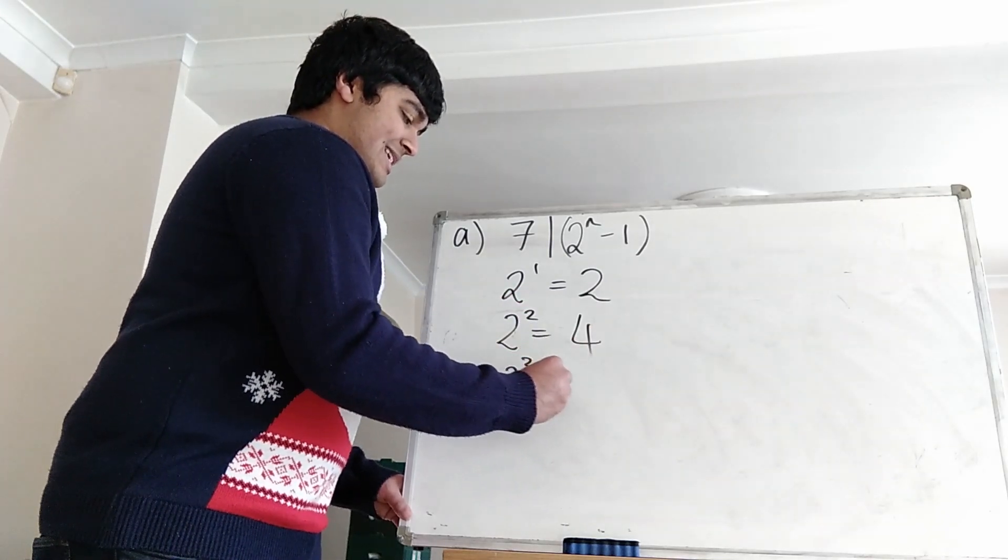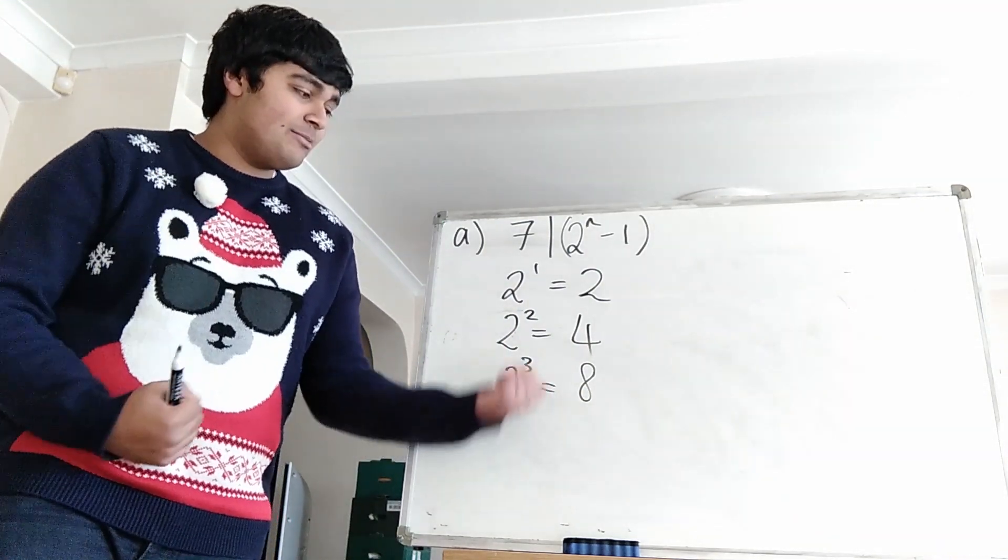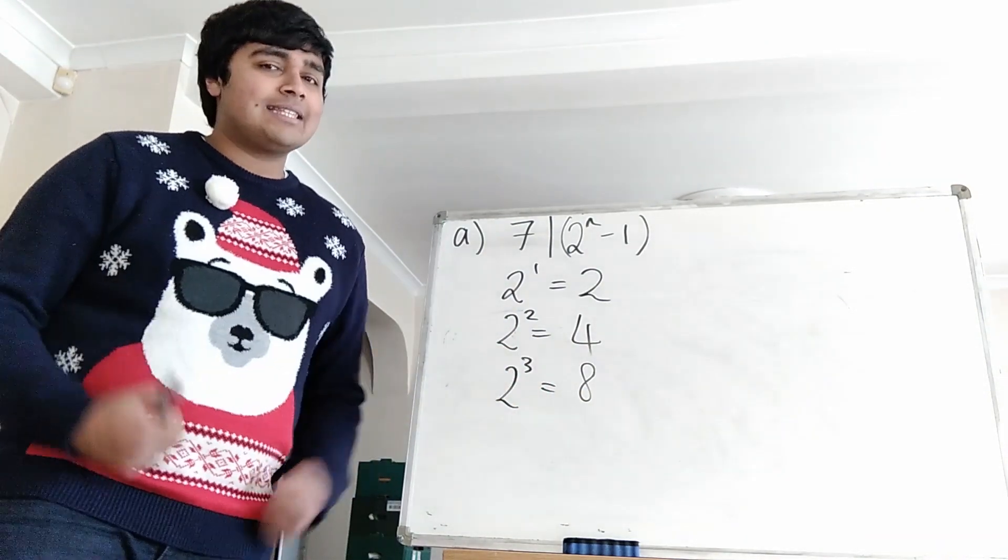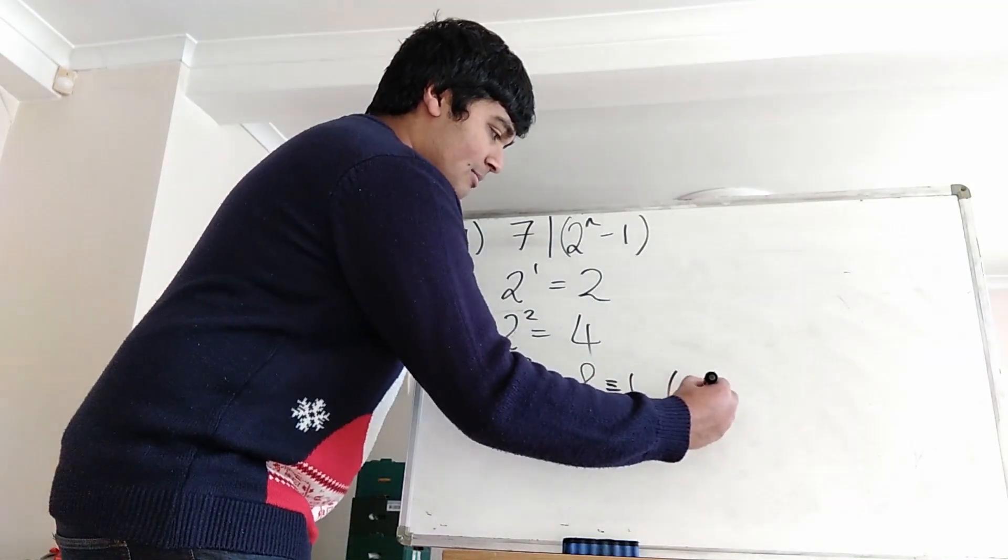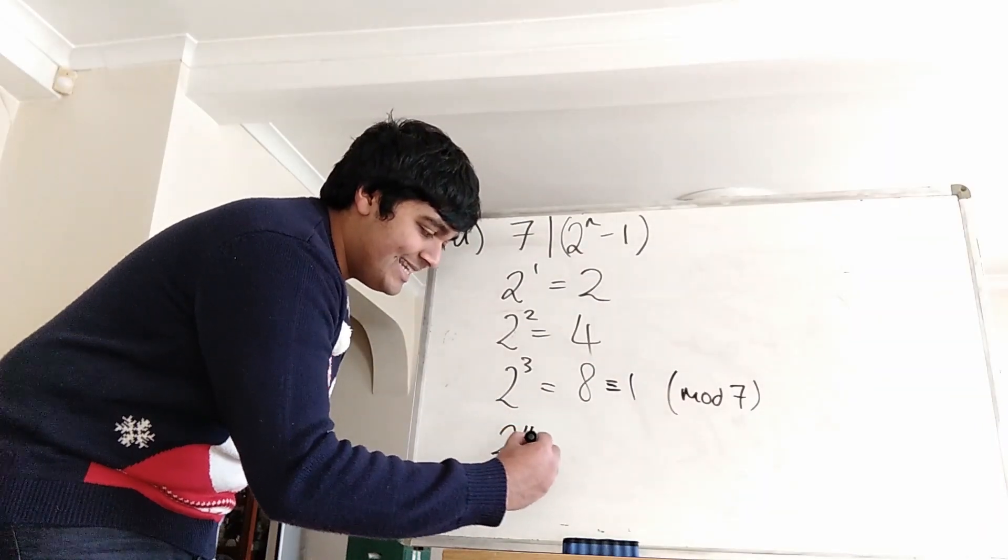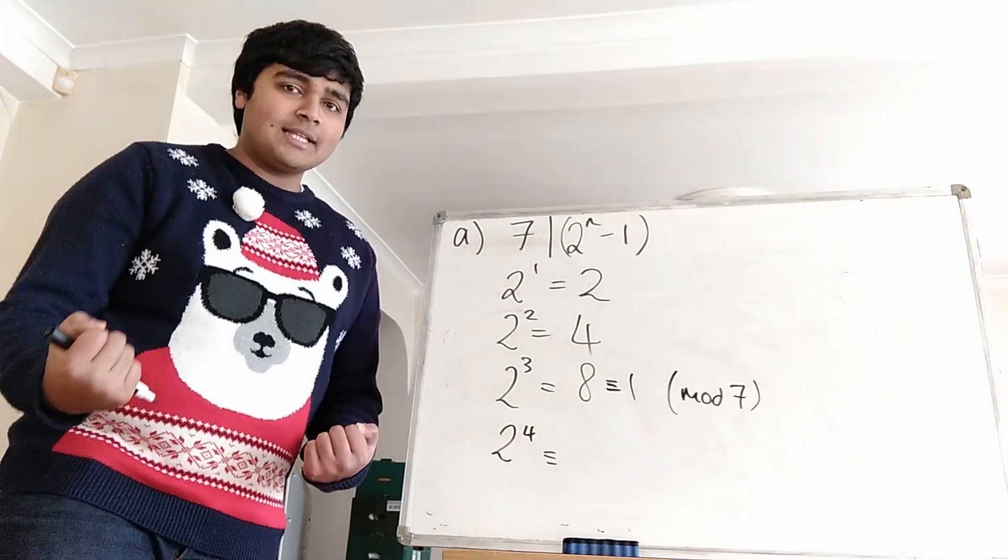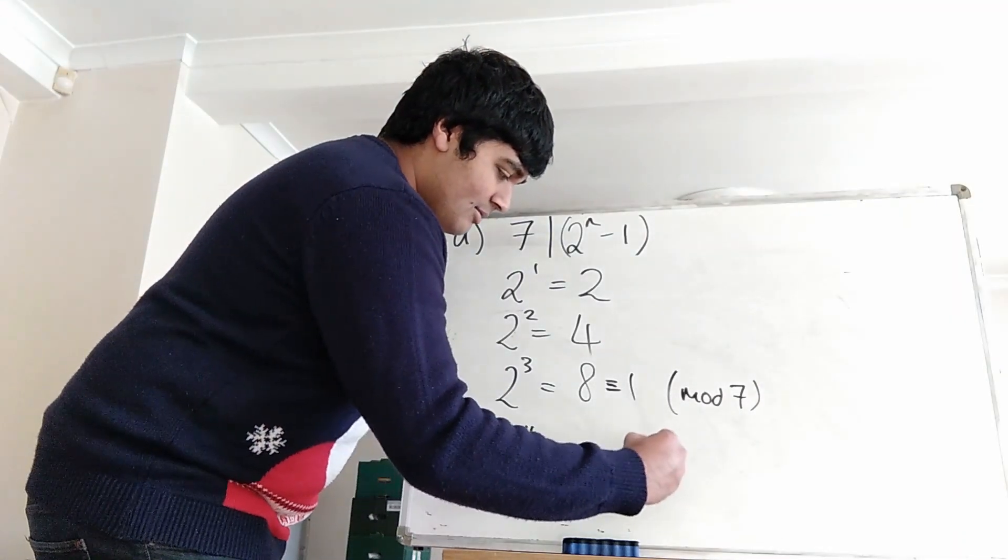2 cubed is 8. But of course 8 is congruent to 1 mod 7 because 8 is 7 plus 1 and 7 is a multiple of 7. Okay, so this is congruent to 1 mod 7. 2 to the 4 now is 16. But that of course is 14 plus 2 and 14 is a multiple of 7. So this is congruent to 2 mod 7.